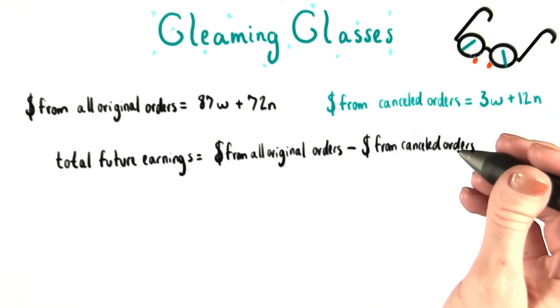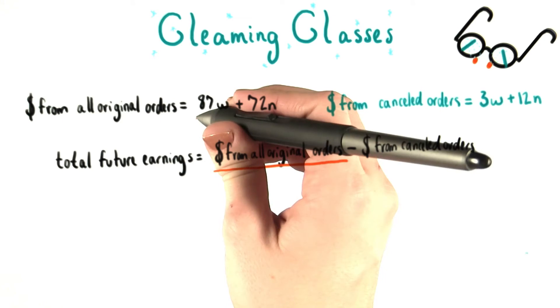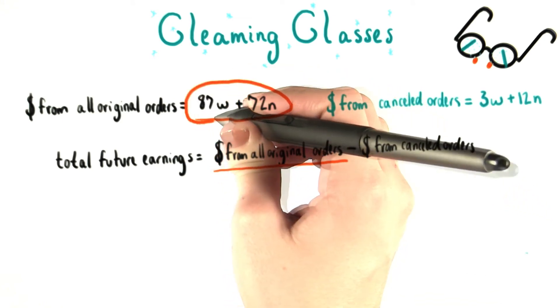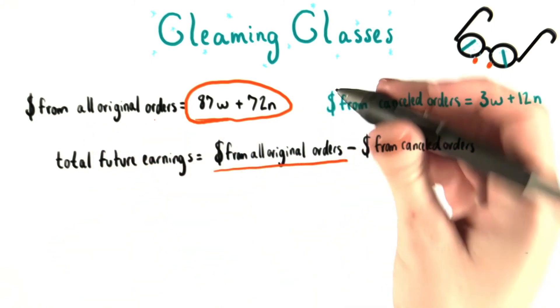So in the case of these equations, that means we can replace money from all original orders right here with this expression, 87w plus 72n, since this equation tells us that that is equal to the money from all the original orders.